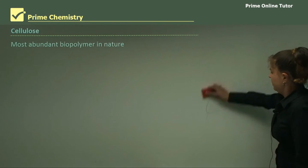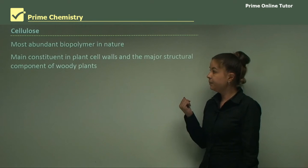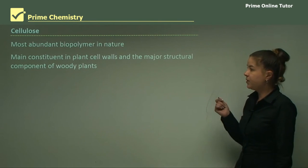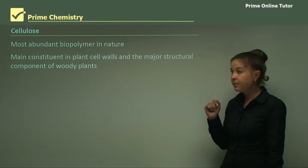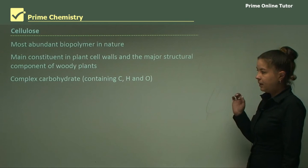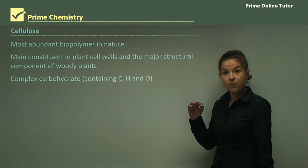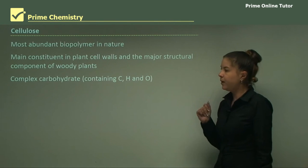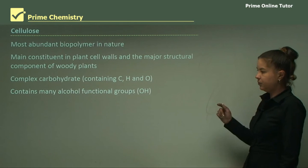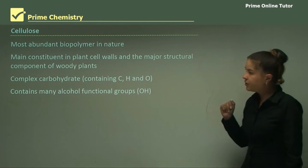Cellulose is the most abundant biopolymer in nature. It's the main constituent in plant cell walls and the major structural component of woody plants. It's a complex carbohydrate, meaning it contains carbon, hydrogen, and oxygen. Carbohydrates are also part of our diet. They're fuel for our bodies. And it contains many alcohol functional groups. The alcohol functional group is an OH. And I'll show you this structure in a moment.